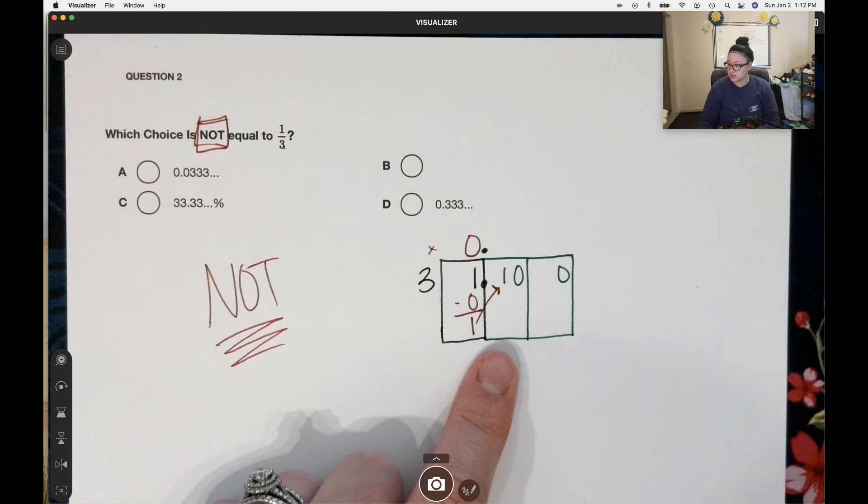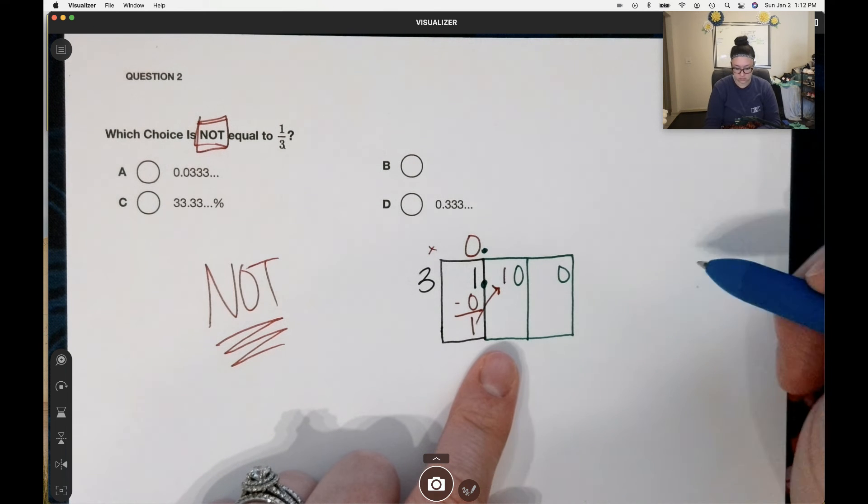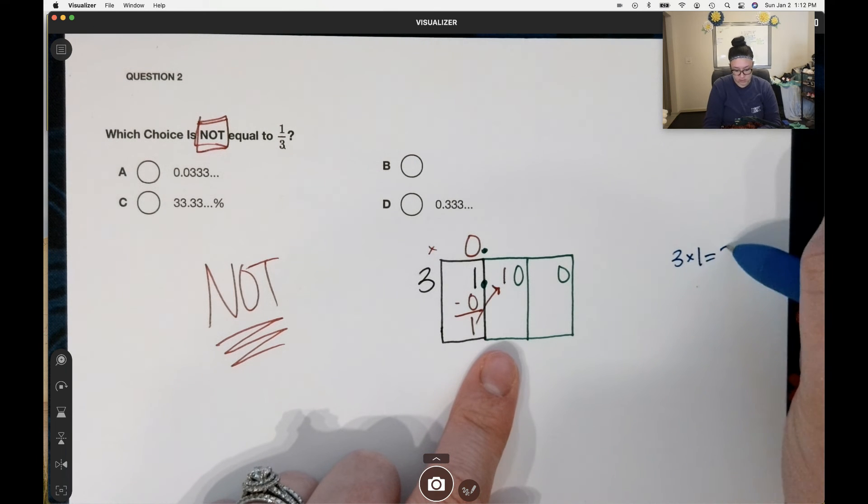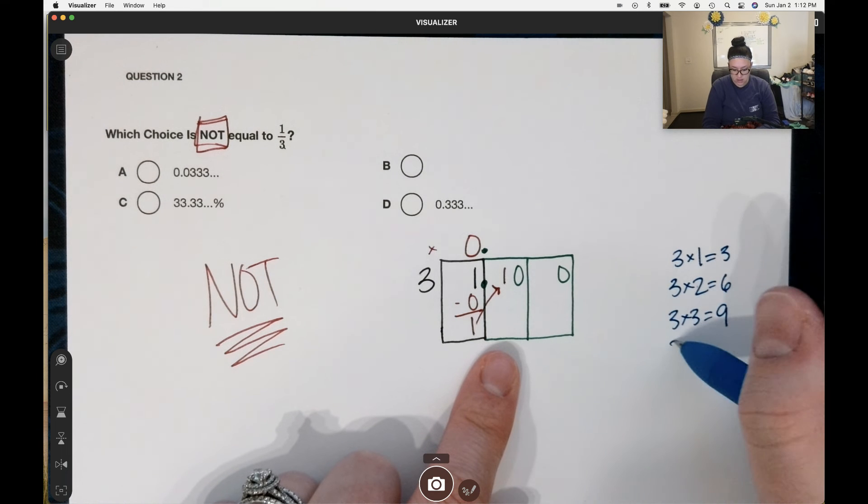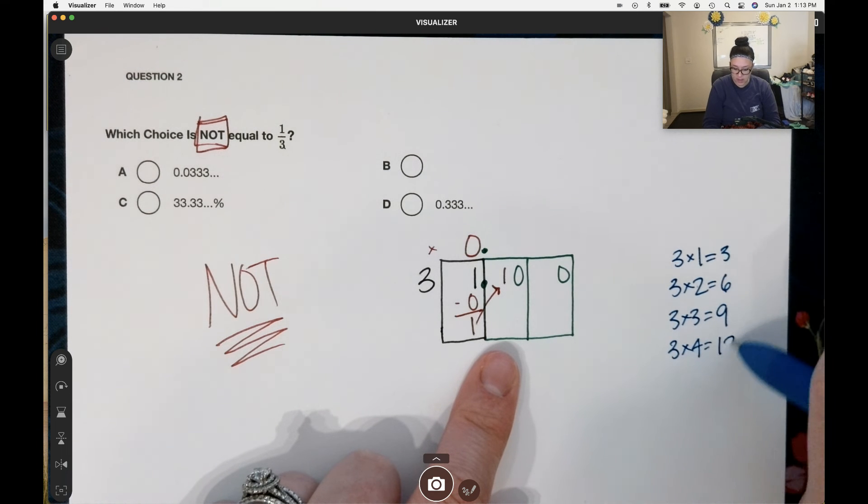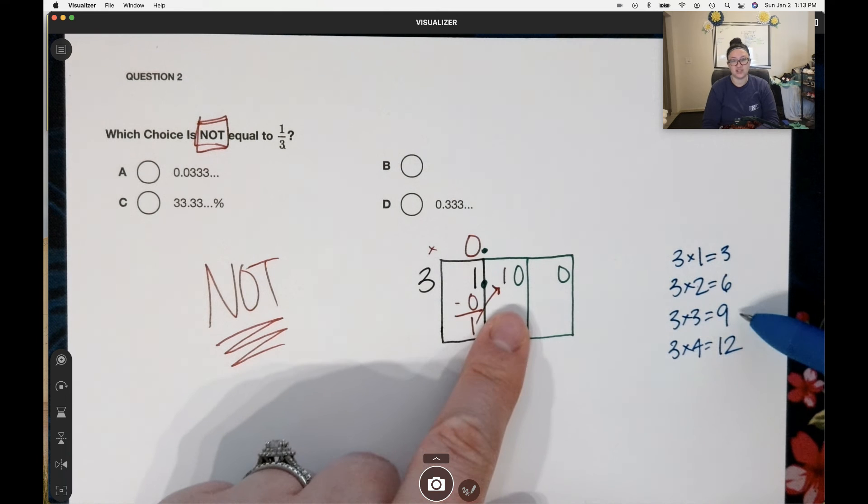How many times does three go into ten? Three times one is three. Three times two is six. Three times three is nine. Three times four is twelve.